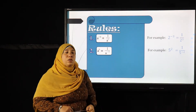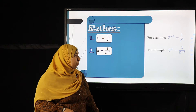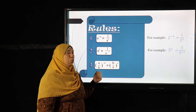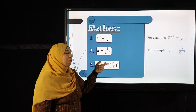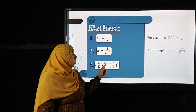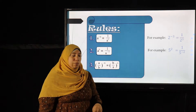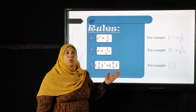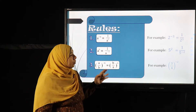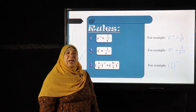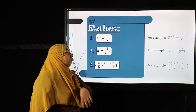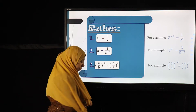Rule three: if it is a fraction already inside the power, (a over b) to the power negative n — I find the multiplicative inverse, which makes it (b over a) to the power n. For example, if I have three over four to the power negative two, to change the power from negative to positive I find the multiplicative inverse of the base, giving four over three to the power two.